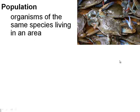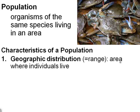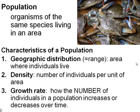We have our populations — organisms of the same species living in one area. There are several different characteristics of a population. First, we have the geographic distribution, or the range — this is the area where individuals live, and they show this a lot on maps. Next, we have density — the number of individuals per unit of area. Our third characteristic is the growth rate — how the number of individuals in a population increases or decreases over time.